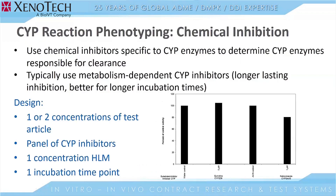The second type of CYP reaction phenotyping experiment is the chemical inhibition experiment. Now, unlike the recombinant CYP experiment, which shows what CYP enzymes can metabolize the drug, this experiment is designed to show what CYP enzymes do metabolize the drug in vivo. For our chemical inhibition experiments, we use chemical inhibitors that are specific to the CYP enzymes in question. Typically, we use metabolism-dependent CYP inhibitors because they're longer lasting and better for the longer incubation times. However, for CYP3A4 and 2D6, we also include some direct inhibitors. The design of these experiments is to look at one or two concentrations of test article, the same panel of the main CYP enzymes, one concentration of human liver microsomes, and one incubation time point.